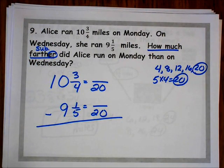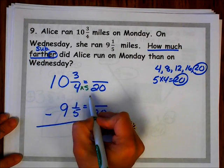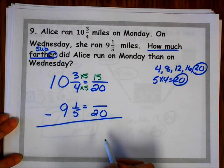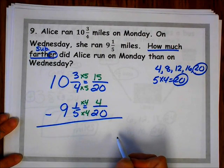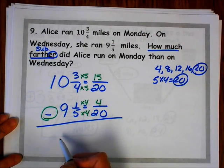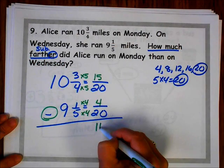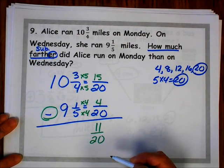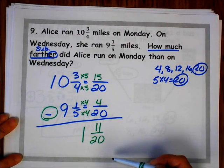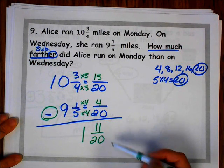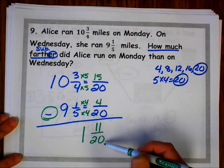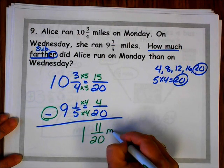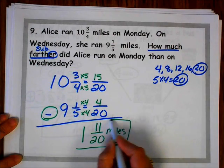Now we need to write our equivalent fractions. 4 times 5 is 20, so 3 times 5 is 15. 5 times 4 is 20, so 1 times 4 is 4. Check your operation — we are subtracting: 15 twentieths minus 4 twentieths is 11 twentieths. Now subtract our whole numbers: 10 minus 9 is 1. I check to see if I can simplify — 11 is prime and will not divide into 20, so my answer is in simplest form. It is a word problem, so don't forget to label. Alice ran 1 and 11 twentieths miles farther on Monday than Wednesday.